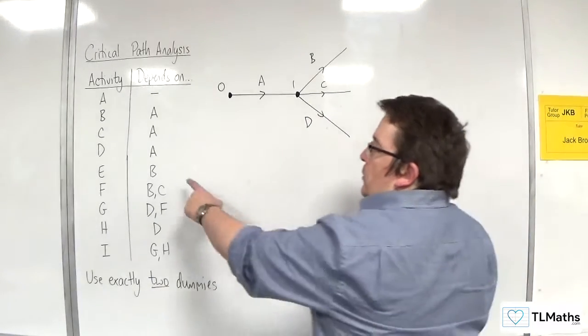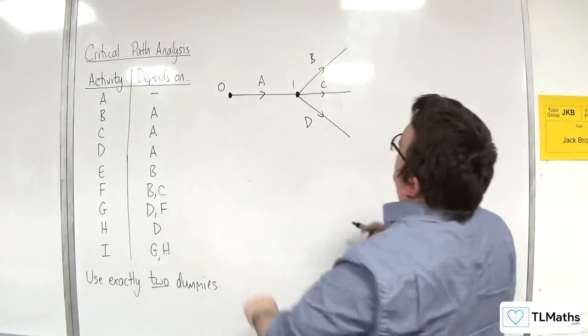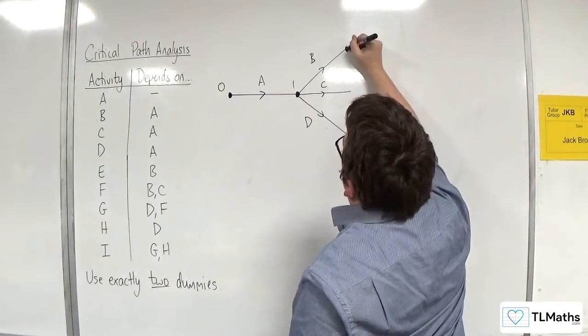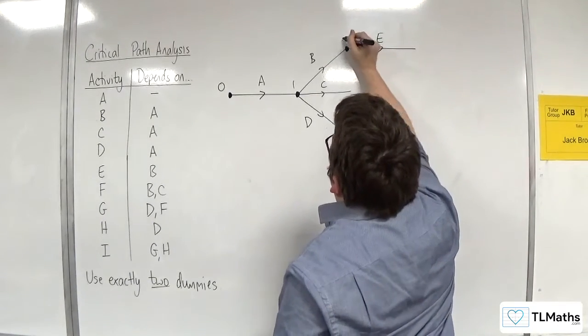Okay, so E relies on B, so I'm going to have that going horizontally for the moment. And I'll label that number 2.